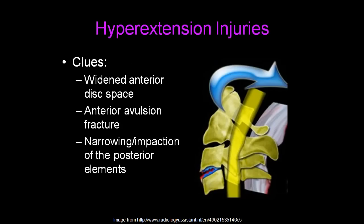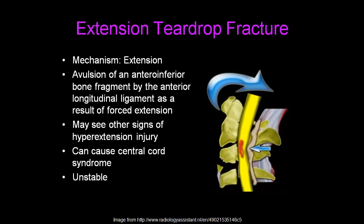Now we'll move on to hyperextension injuries. The clues to a hyperextension injury are widened anterior disc spaces, an anterior avulsion fracture of a vertebral body, and narrowing or impaction of the posterior element. An extension teardrop fracture is a type of unstable injury that occurs with extension. It is an avulsion of the anteroinferior vertebral body by the anterior longitudinal ligament as a result of forced extension. You may also see other signs of hyperextension injury.